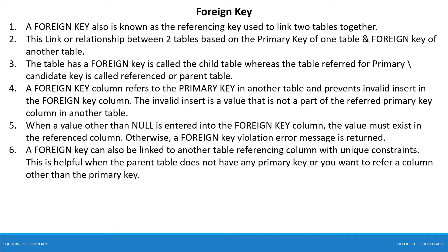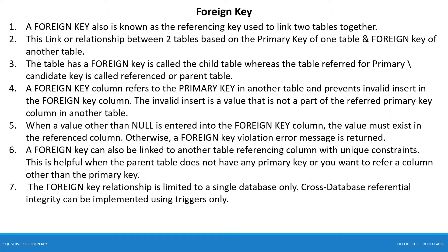A foreign key can be linked to another table's referencing column with unique constraints. This is helpful when the parent table does not have any primary key, or when you want to refer to a column other than the primary key. So this is very useful when you try to do a foreign key relationship with columns other than the primary key — you can have a unique key column in the table and refer to that. The foreign key relationship is limited to a single database; cross-database integrity cannot be implemented. If you want to do so, you need to use triggers. Foreign key is not possible on temporary tables.